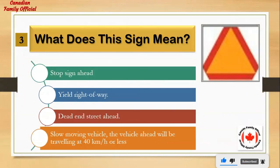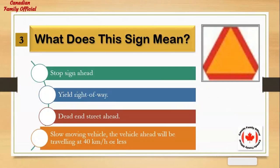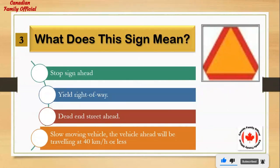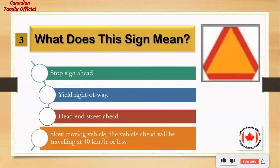What does this sign mean? Number 1: stop sign ahead. Number 2: yield right of way. Number 3: dead end street ahead. Number 4: slow moving vehicle — the vehicle ahead will be traveling at 40 kilometers per hour or less. And the answer is: slow moving vehicle.